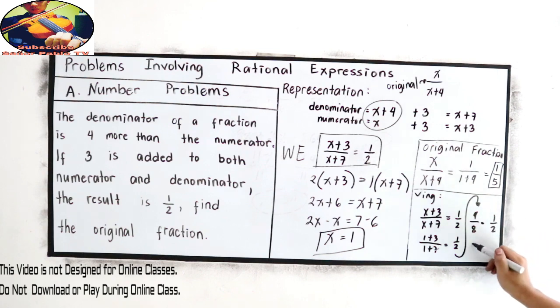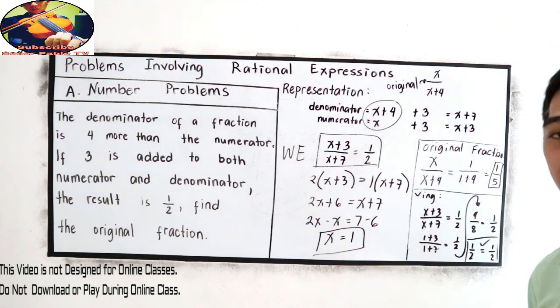Four over eight, that is one half, and it is equal to one half. Correct. That is the checking.